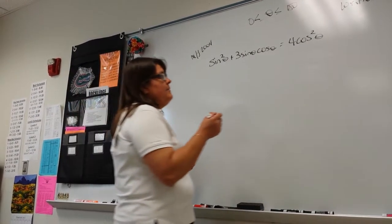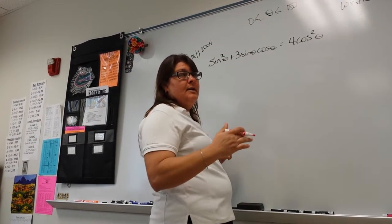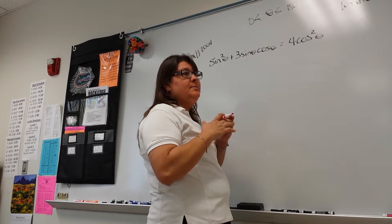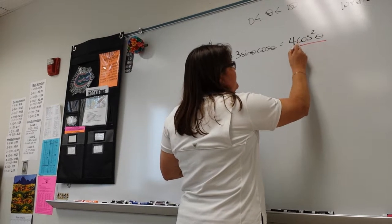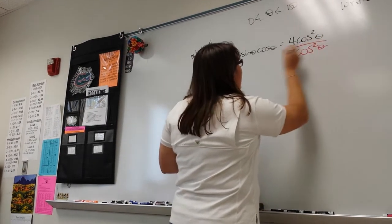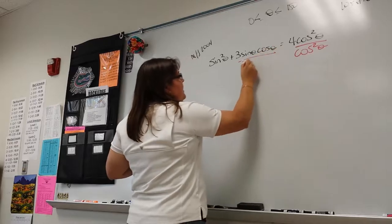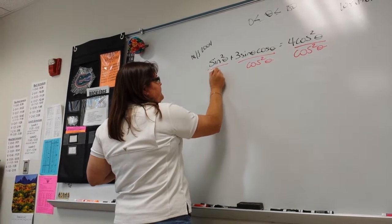Because you need sine over cosine and you don't want just plain cosine left, you have to divide by the highest power of cosine that you can find.